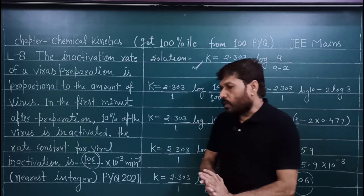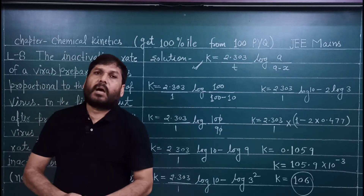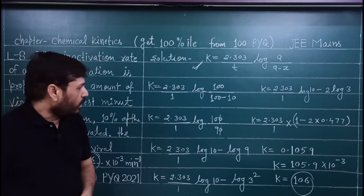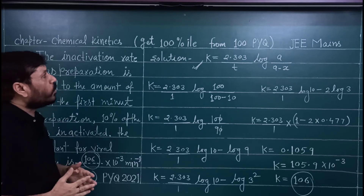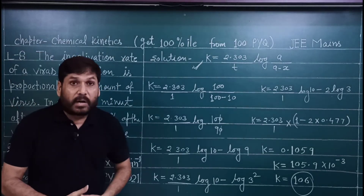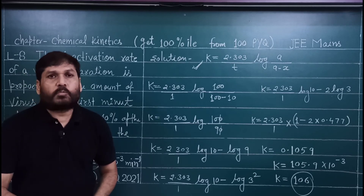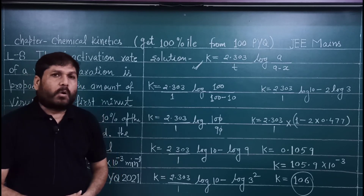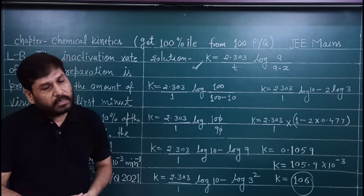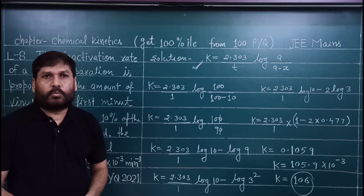For solving such questions, remember log values up to log5. You can check from any book — sometimes the paper itself provides these values, in which case you will have no problem. How did you find this series 'Get 100 Percentile from 100 Previous Year Questions'? Share your thoughts in the comment section and let me know if this series should continue. Thank you very much. The next lecture will continue.